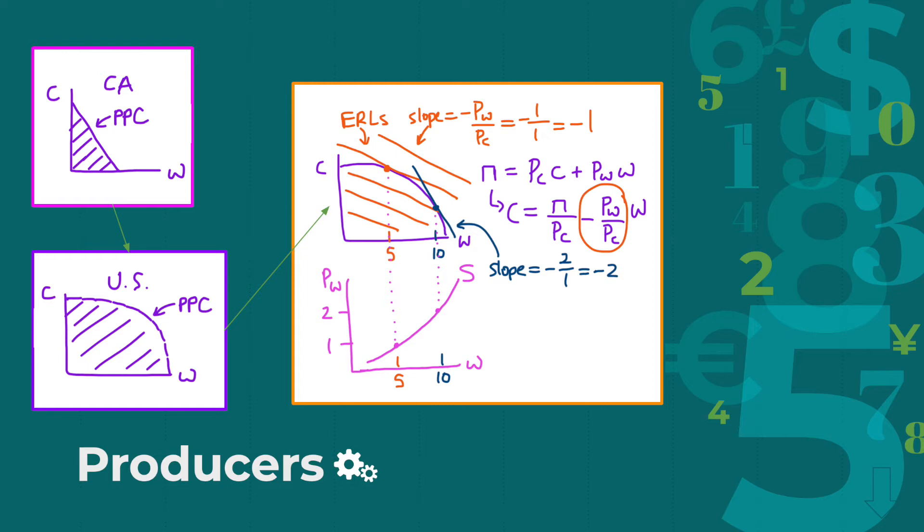These represent the possible production combos of wheat and corn that will give a certain amount of profit. Assuming the producer wants to maximize both output and revenue, they will choose the equal revenue line tangent to the production possibilities curve.